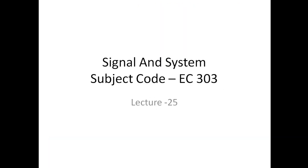The subject code is EC303 and this is Lecture Number 25. In the previous lectures we described what the Z-transform is, the specific properties and theorems related to the Z-transform, the difference between the Z-transform and Fourier transform, the advantages and disadvantages of Z-transform, and the basic difference between the Z-transform and Laplace transform, and the significance of using the Laplace transform in place of Z-transform or vice versa.